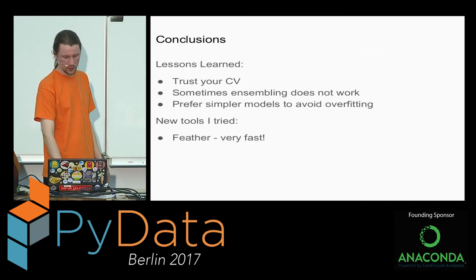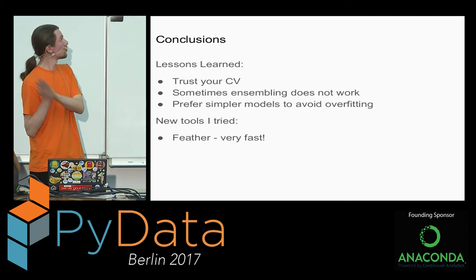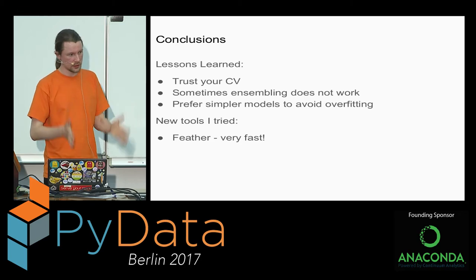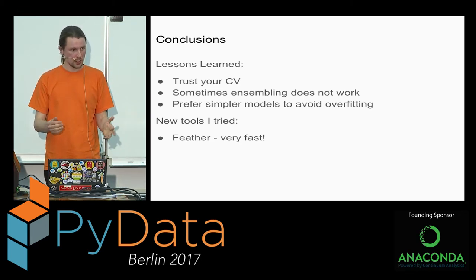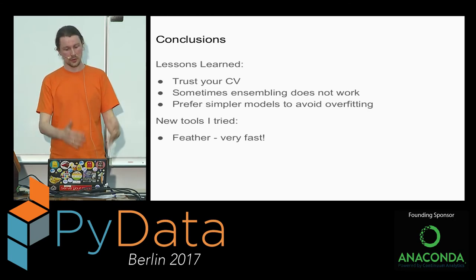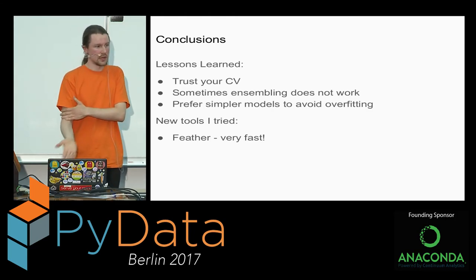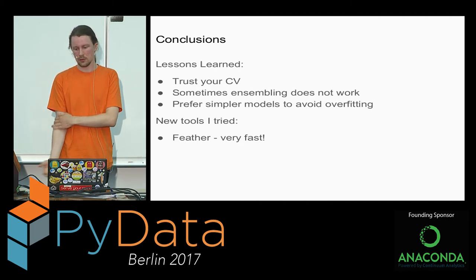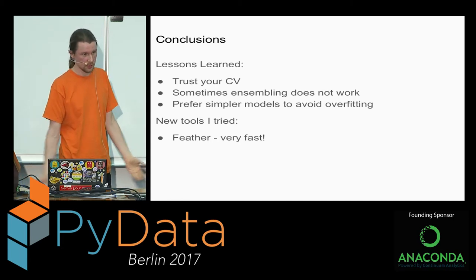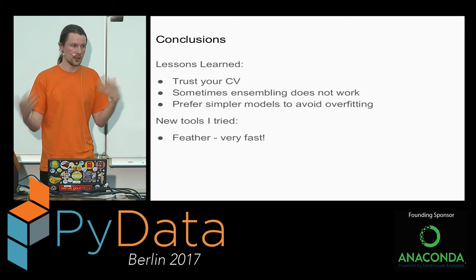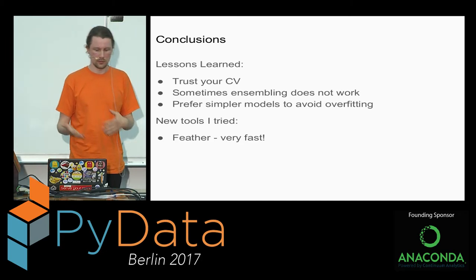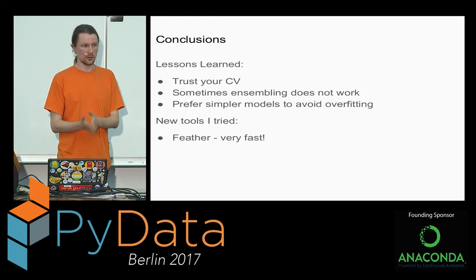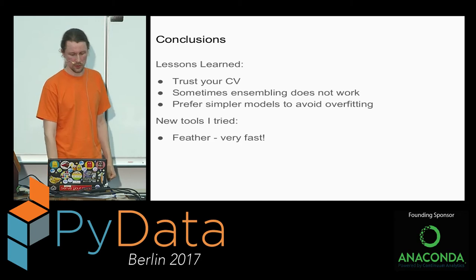Conclusions: unlike in Kaggle, I couldn't check my models against a leaderboard, so I had to really trust my cross-validation. The validation scheme I built had to be solid. Also, this was one of those unusual cases where ensembling didn't work — and if you have a proper cross-validation scheme, you should be able to catch that, like detecting that an ensemble overfits. At the end, I preferred simple models to more complex ones, which resulted in good runtime and helped avoid overfitting.